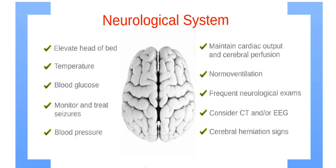Monitor blood pressure, and maintain cardiac output and cerebral perfusion. Check respiratory status. Perform frequent neurological exams. Observe closely for seizures, and consider CT or EEG. Watch for signs of cerebral herniation, which include dilated pupils, hypertension, bradycardia, or respiratory irregularities, including apnea.